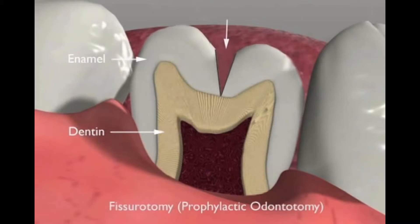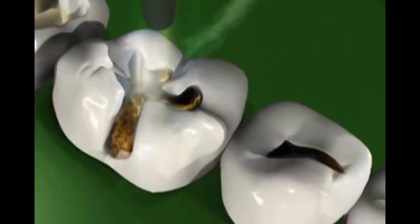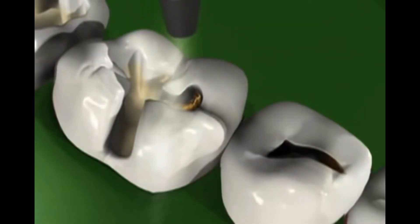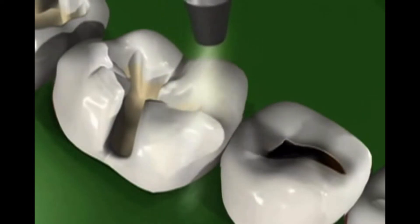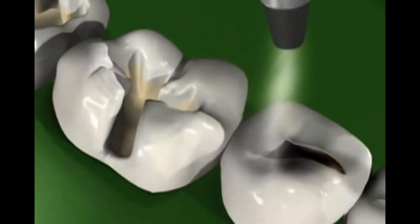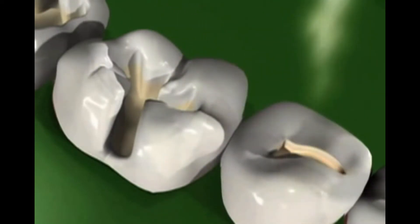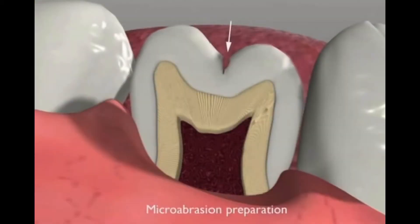The grooves can also be cleaned out less invasively with a microabrasion handpiece, which sprays a stream of abrasive particles deep into the pits and fissures to remove plaque bacteria and roughen the enamel surface. Since microabrasion doesn't completely eliminate the deep, narrow crevices, it is usually followed by placement of a dental sealant. If the preparation of the groove extends into the dentin layer of the tooth, a filling is placed instead.